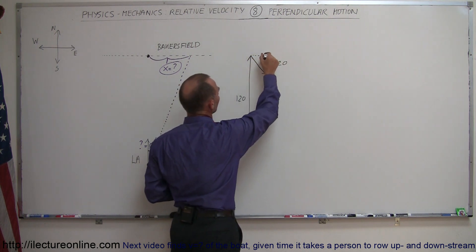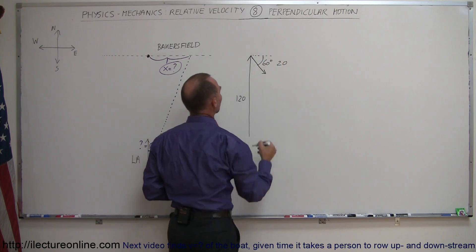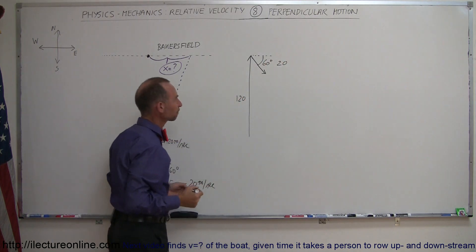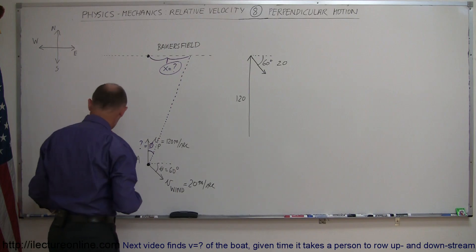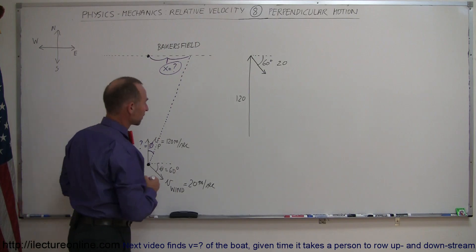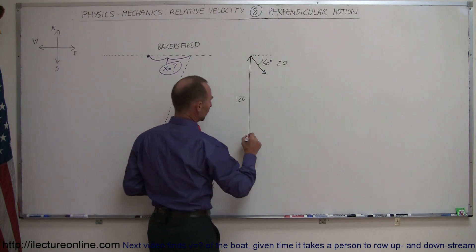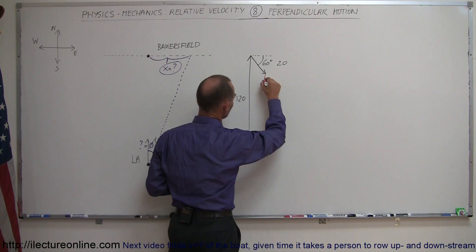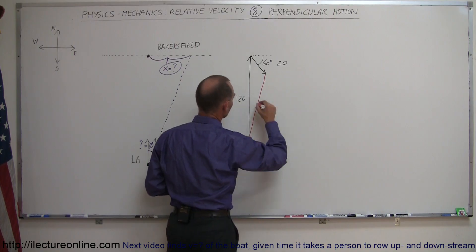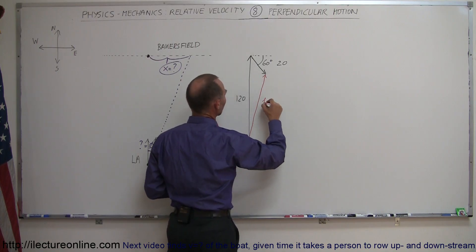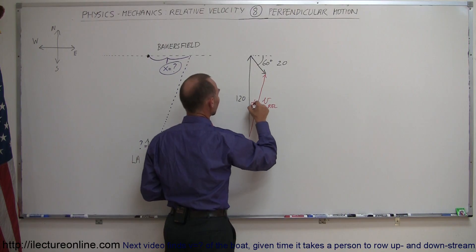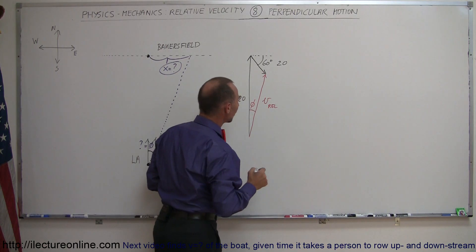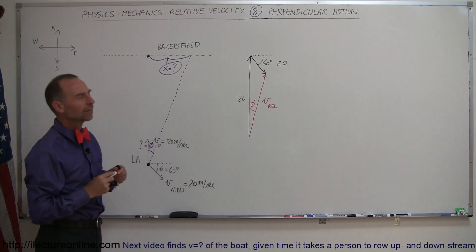This angle here is 60 degrees below the horizontal. The resultant velocity will be the vector sum of the two. That will be the velocity of the plane relative to the ground, and we want to know what this angle is — let's call it phi. What is phi equal to, and how do we figure that out?